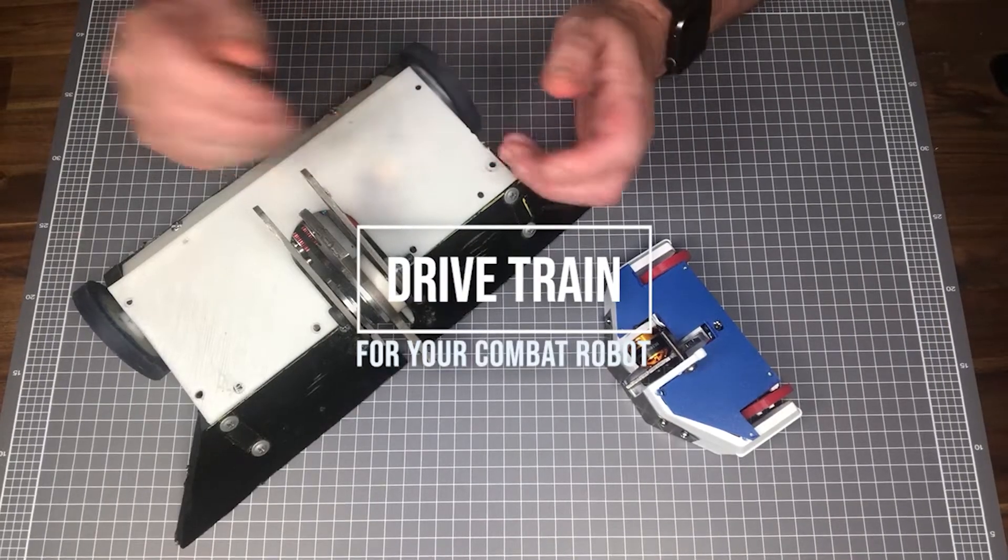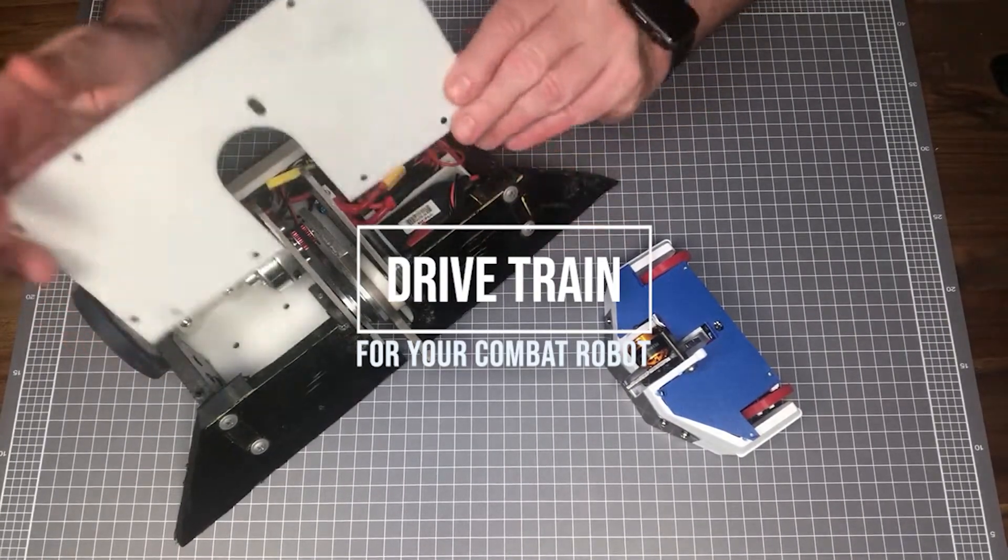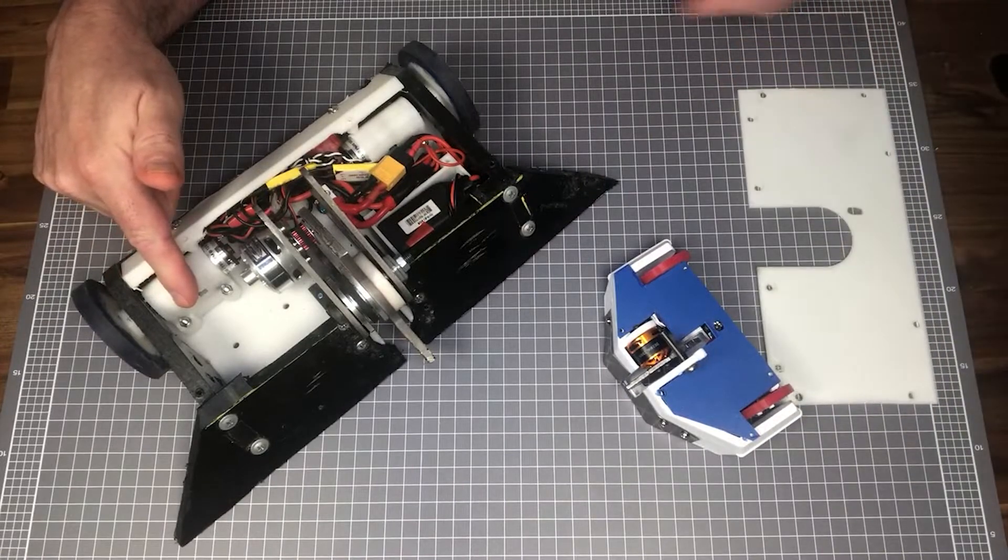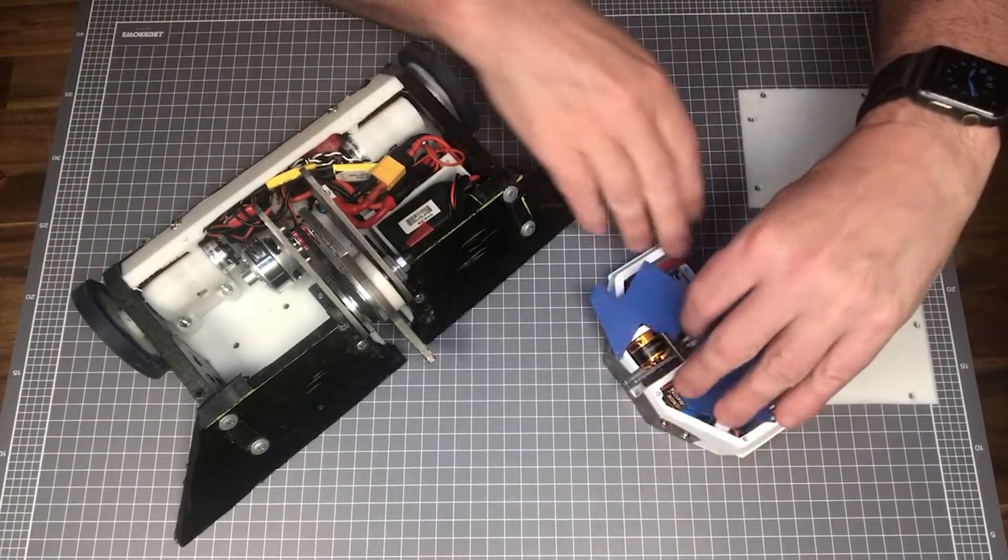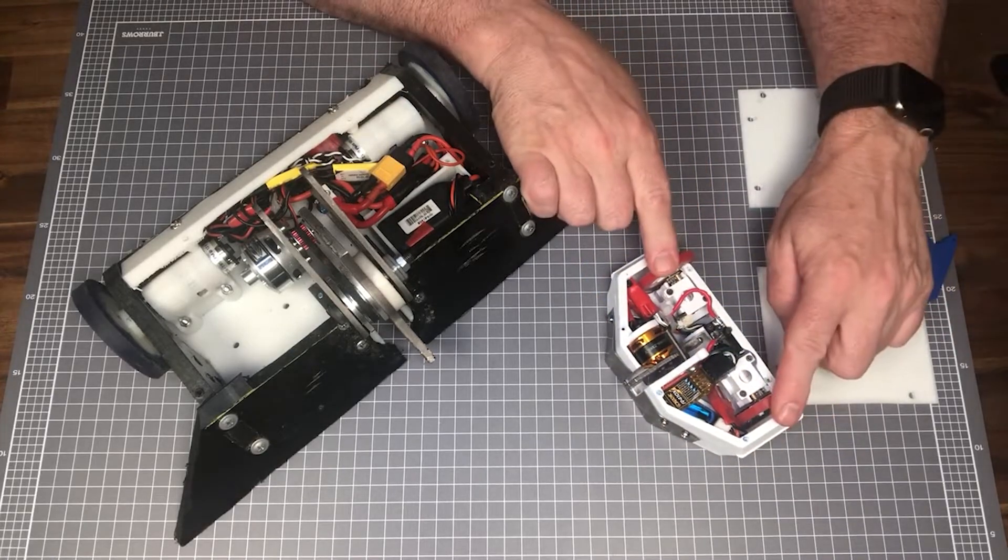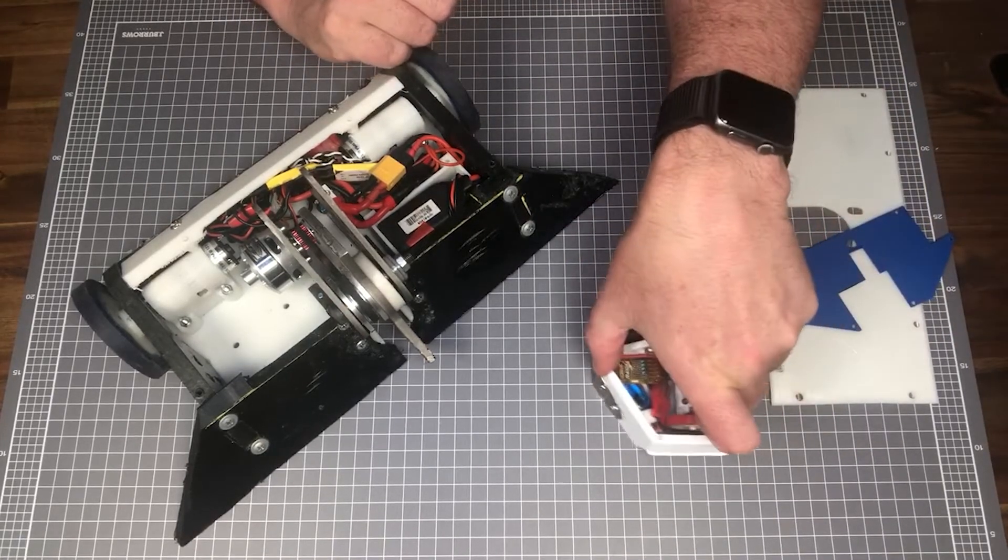The drivetrain is just a way of describing all the components that form the drive system, such as motors, gearboxes and shafts. In combat robots, the drivetrain does more than just move the robot. It also is used to steer your robot.